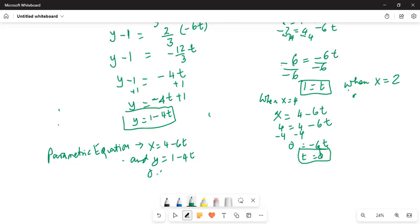And t, the limits of t are from 0 to 1. So 0 less than or equal to t less than or equal to 1. This is because x varies from -2 to 4.